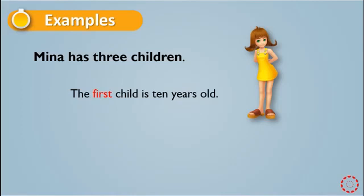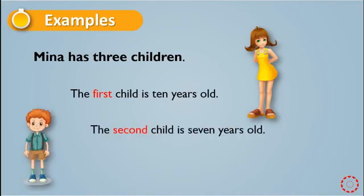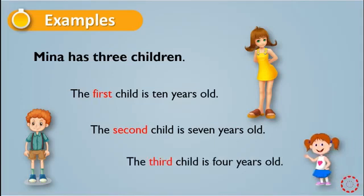We use an ordinal number because we are talking about the position. The second child is seven years old. We don't say the two child; we say the second child. The third child is four years old.